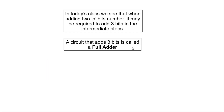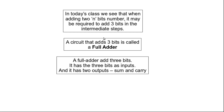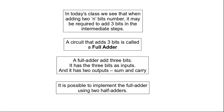A circuit that adds three bits is called a full adder. A full adder adds three bits — it has three bits as inputs and two outputs: sum and carry. It is possible to implement the full adder using two half adders.